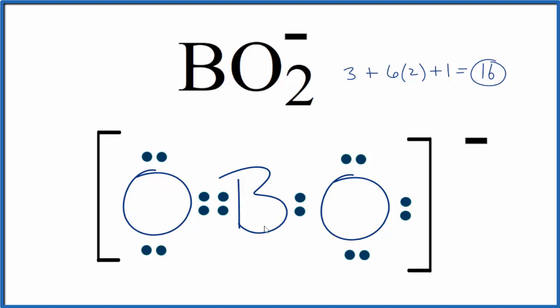You do need to remember that boron is happy with just six valence electrons. And you do want to check your formal charges. We want to make sure that we're as close to zero as possible, but still having that negative charge to match the charge on our ion here. And we want the more negative formal charge on the most electronegative element. In this case, the oxygen.